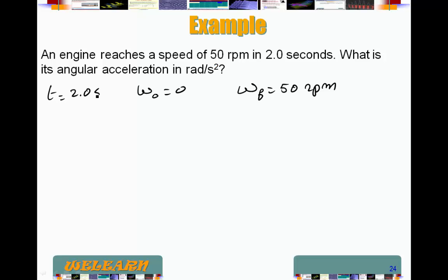Now, since they want the answer in radians per second squared, I need to change this to radians per second. So to do that, 50 rotations per minute. So I multiply it by my conversion factors. So to get rid of the rotation, I need rotation in the denominator.